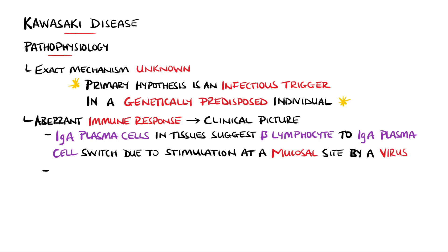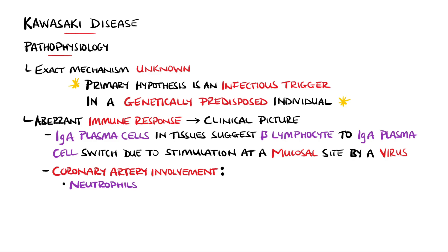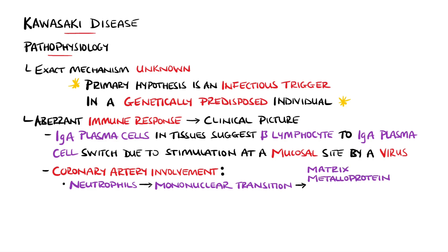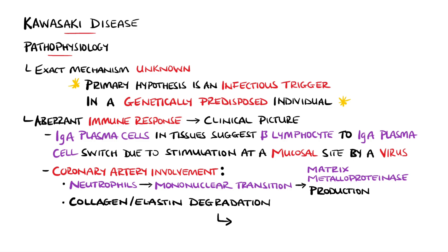We mentioned that coronary arteries are affected, often resulting in aneurysms. Research suggests that this is caused by the release of inflammatory cytokines and enzymes, particularly neutrophil infiltration with mononuclear cell transition that then release matrix metalloproteinases that destroy collagen and elastin fibers. This leads to a weaker structure of the vessel wall and then aneurysm formation.